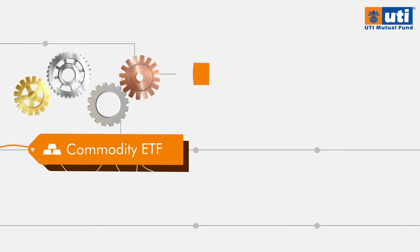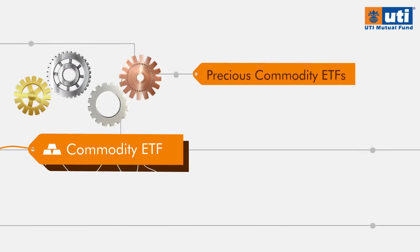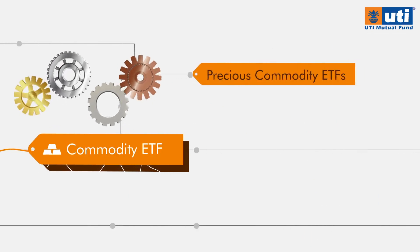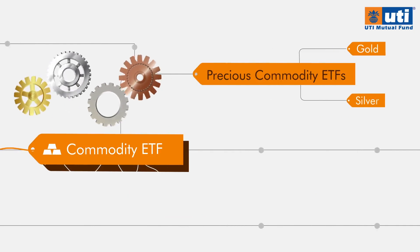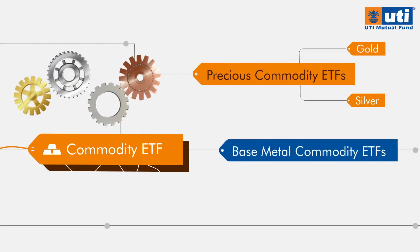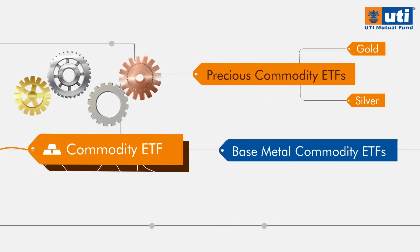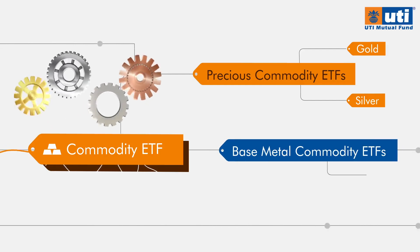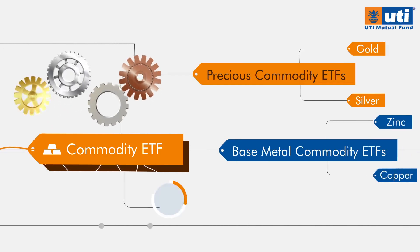Commodity ETFs include Precious-commodity ETFs — ETFs based on precious metals like Gold and Silver — and Base Metal Commodity ETFs — ETFs based on base metals like Copper and Zinc, etc.